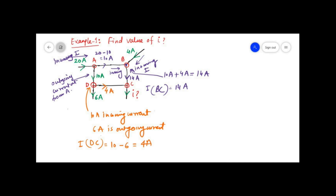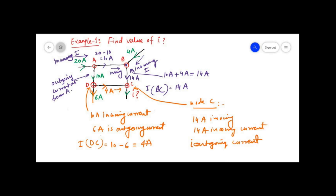At node C, 14 ampere is incoming and 4 ampere is also incoming current. The value of I — which is the outgoing current — is 14 ampere plus 4 ampere equals I. So I will be 14 plus 4 equals 18 ampere. The value of I is 18 ampere, so 18 ampere current will flow from this branch.